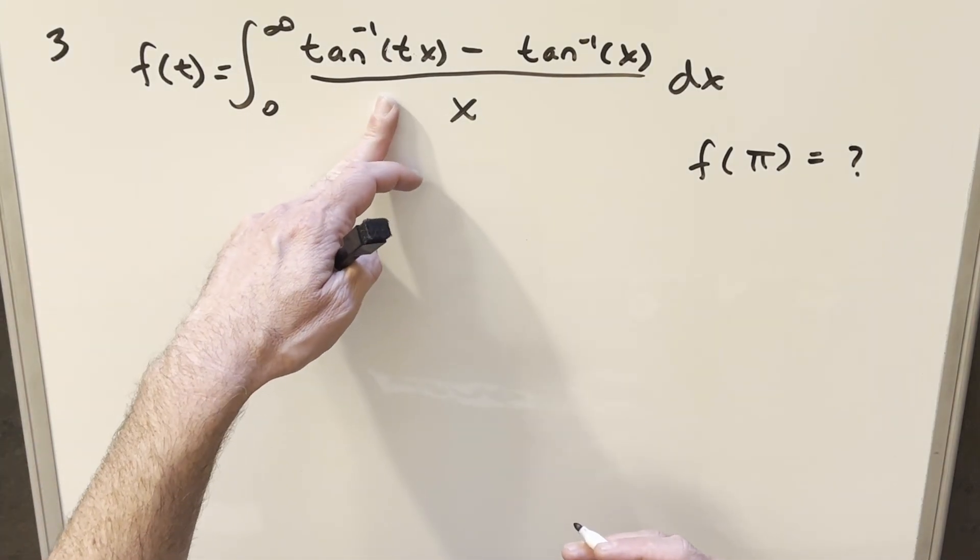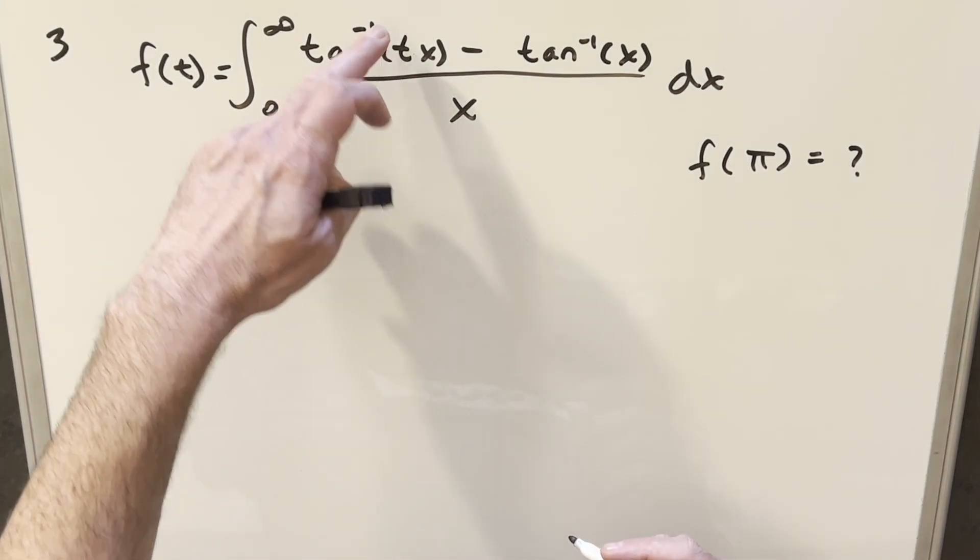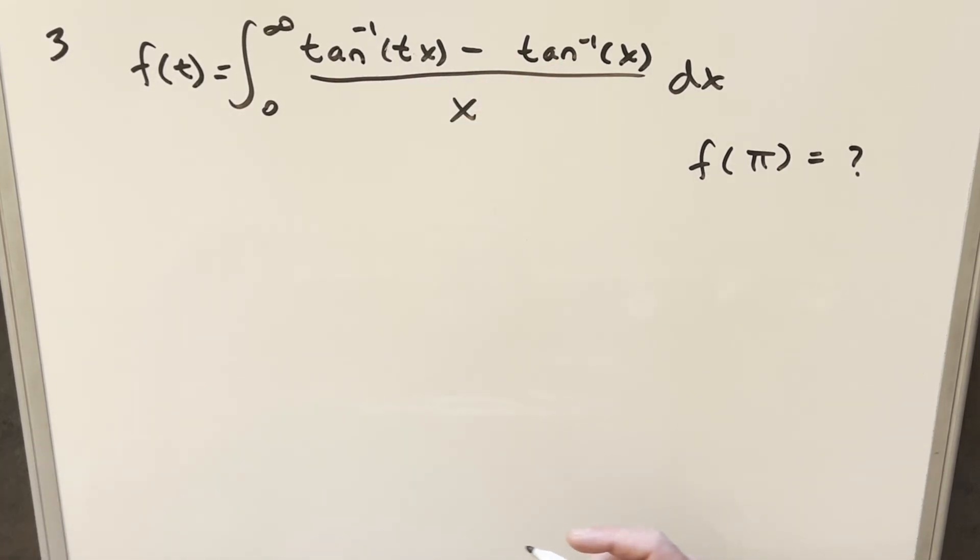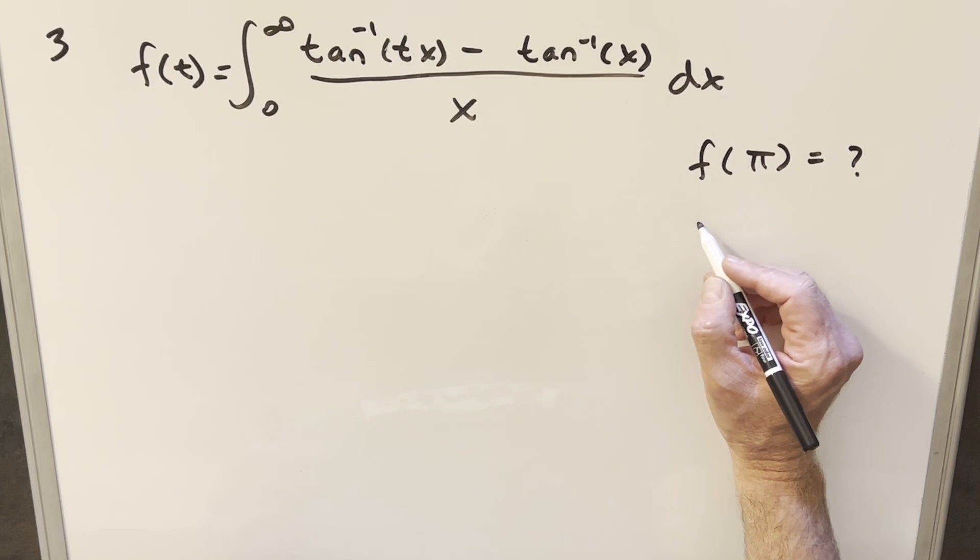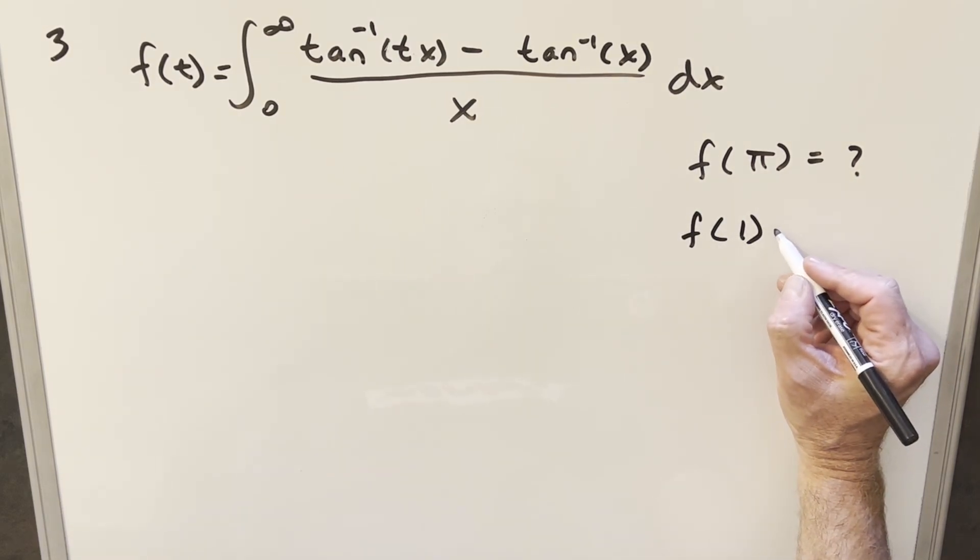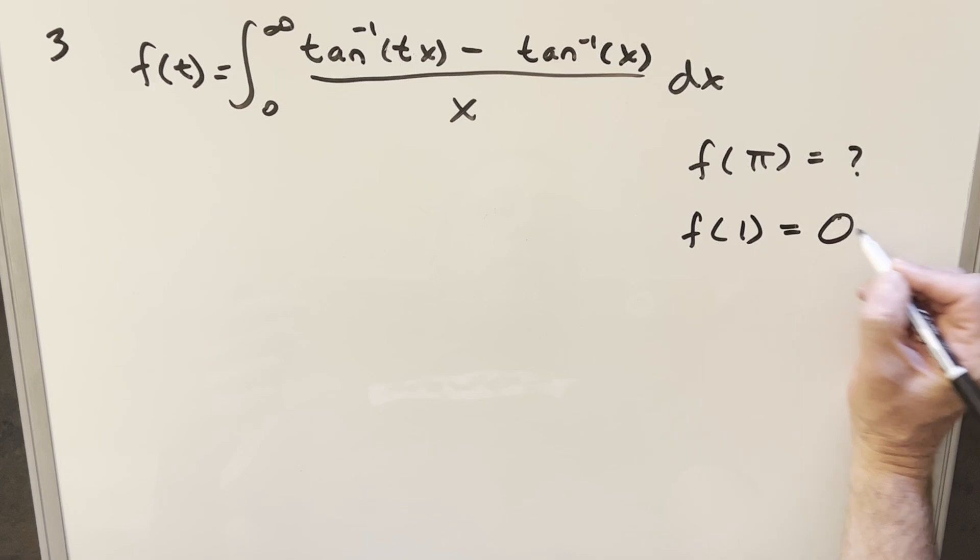Now we do want, when we do Feynman's trick, we're going to want one known value. You'll just notice when, if you set t equal to 1, then we have arctan x minus arctan x. The numerator is zero, the whole thing is zero. So we can use this value that we're going to know. We can come back to this later. We know that f of 1 is going to just be equal to zero.